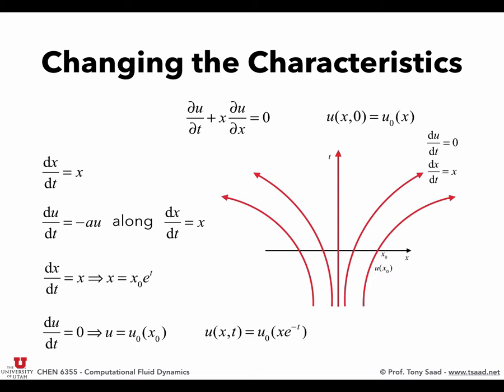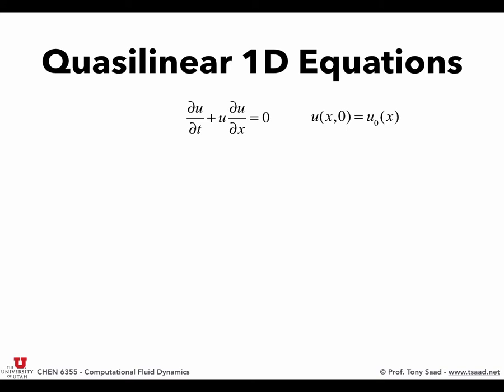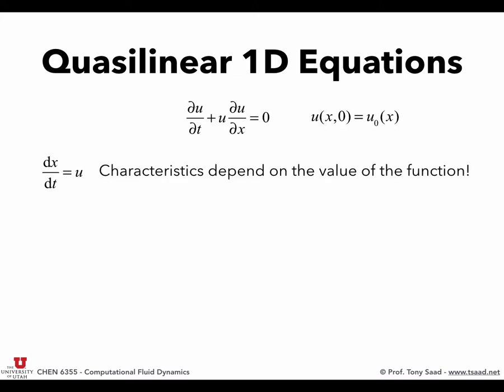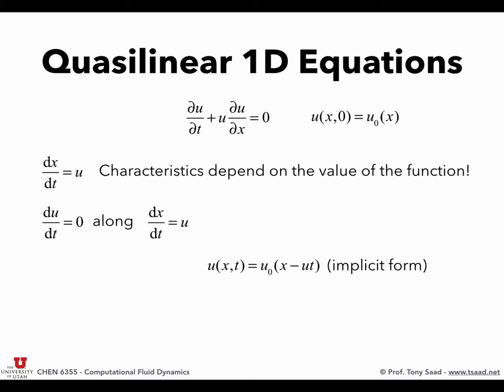Now let's look at Burgers' equation — not 'Burger's apostrophe-s,' but Burgers' equation: du/dt + u·du/dx = 0. Here dx/dt = u, meaning the propagation speed depends on the value of the function itself. We still have du/dt = 0 along dx/dt = u. The solution is typically expressed in implicit form as u = u₀(x - ut), but we don't know what u is, so it's an implicit expression.